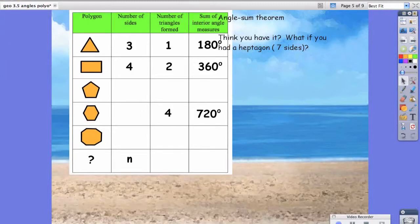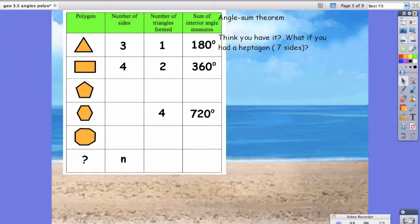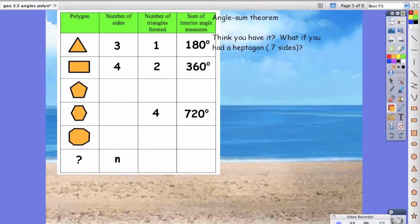I filled out a few of these for you. In this triangle, there are three sides. The triangles formed are one because I can only make one triangle. The sum of interior angles of a triangle are 180 degrees. In a square, I can have two triangles. There are four sides, obviously. The number of triangles are two. We can connect this corner and make two triangles. The sum of interior angles of this rectangle is 360 degrees. If one triangle is 180 degrees, then two triangles will be double that.